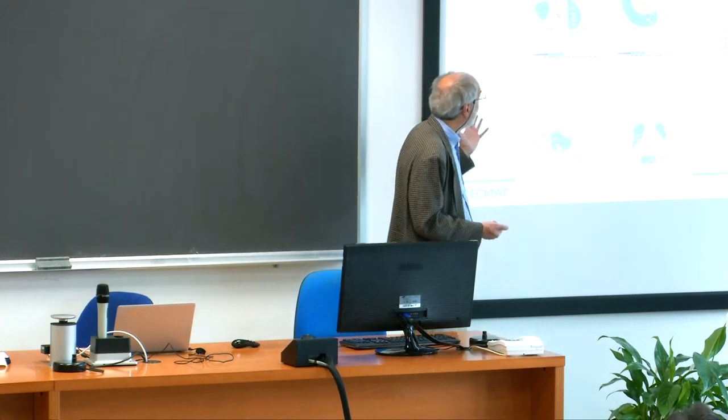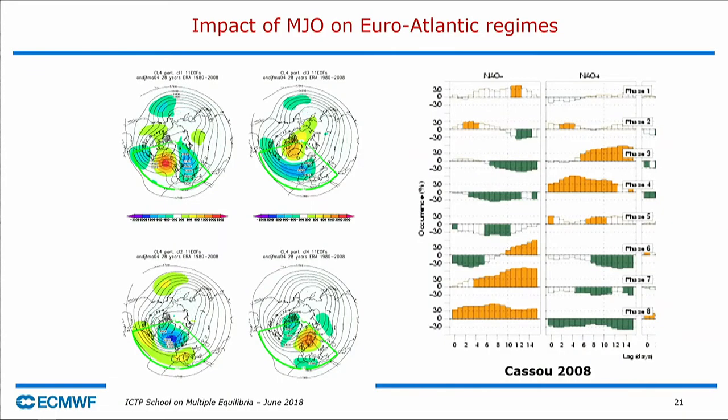This became a very popular and influential paper, and a number of centers including ECMWF are now exploiting these connections, displaying frequency of the four clusters together with MJO statistics. And it works — sometimes you can really see that if there's a big MJO, you can expect a particular phase of the NAO and it really happens. So it's not just a statistical construct.